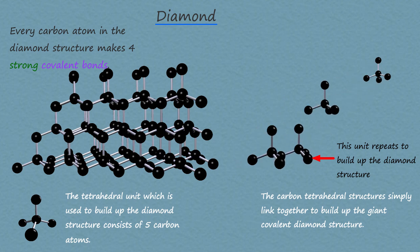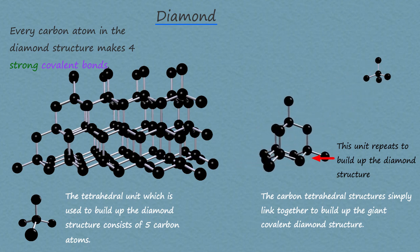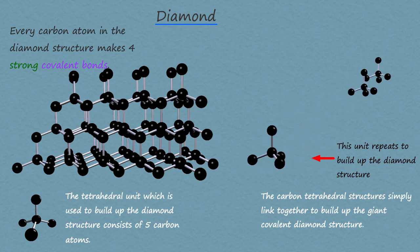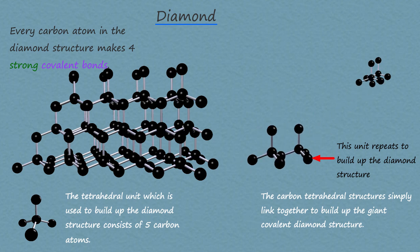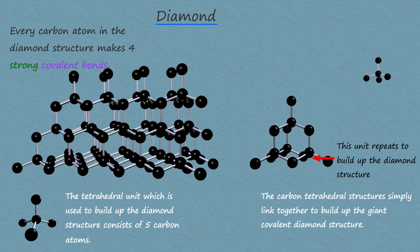In a covalent bond, the electrons are held firmly in place and cannot move, and this means that diamond will be an electrical insulator.